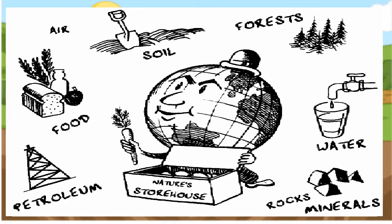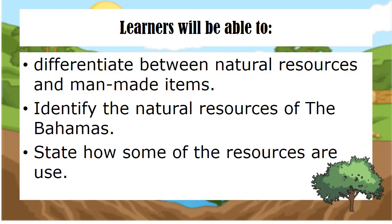Can you identify some of the things that are here? We have the air, food, petroleum, forest, water, rocks, and minerals. Where did these things come from? How are they used? In this lesson, you will learn to differentiate between natural resources and man-made items. You will identify the natural resources of the Bahamas, and you will state how some of the resources are used.